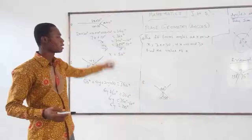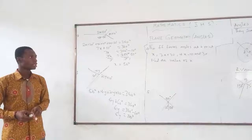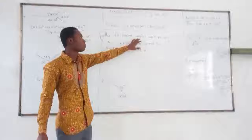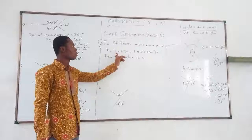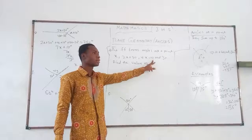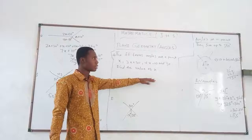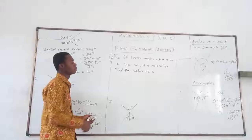The fourth example: we have the following four angles at a point: X, 2X plus 30, 4X minus 10, and 3X. For this one, I will leave it for you to answer. Just write X plus 2X plus 30 plus 4X minus 10 plus 3X equals 360.